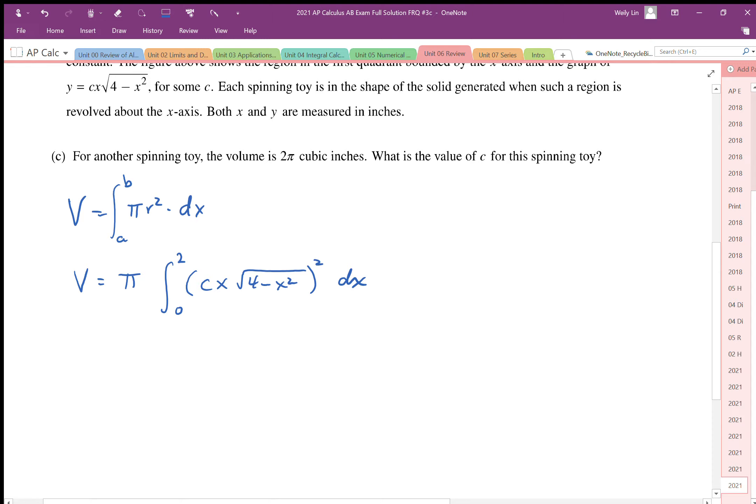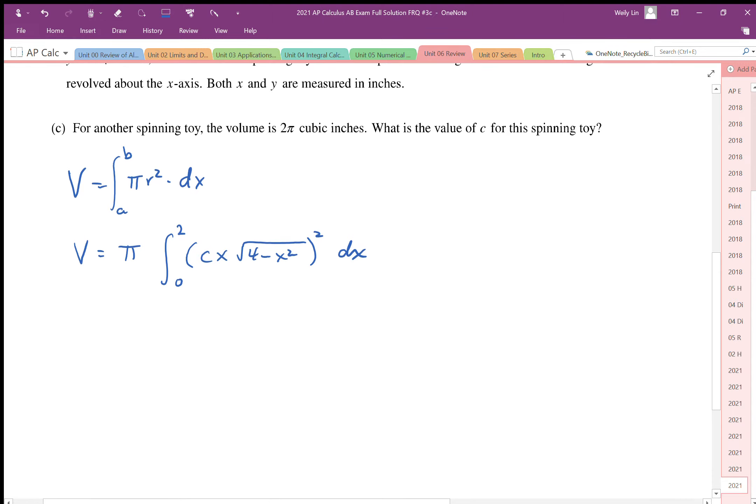Okay, so there is our integral expression. We need to integrate this and I'm just going to pull out a few things here. So we're going to end up squaring these terms. We end up with c²x² and when we square the square root we end up getting rid of the square root.